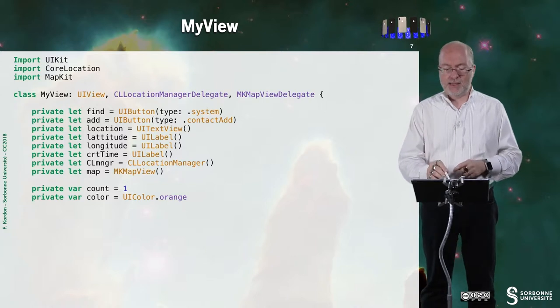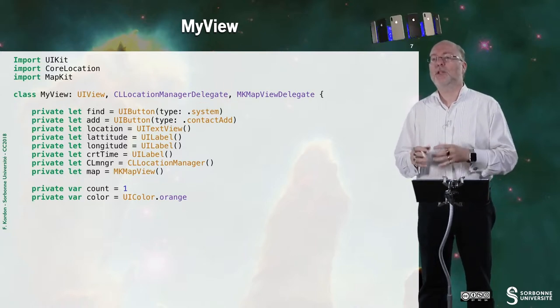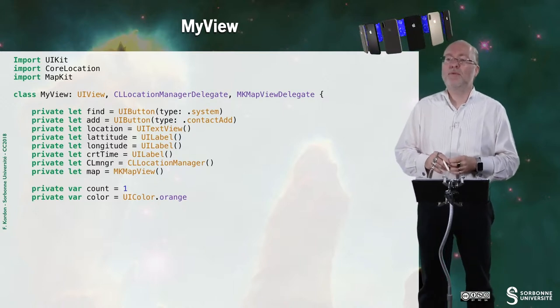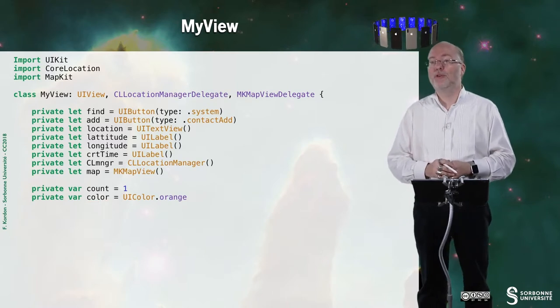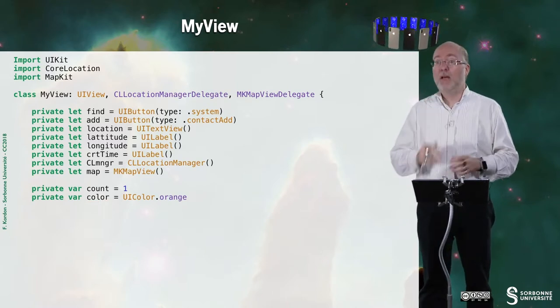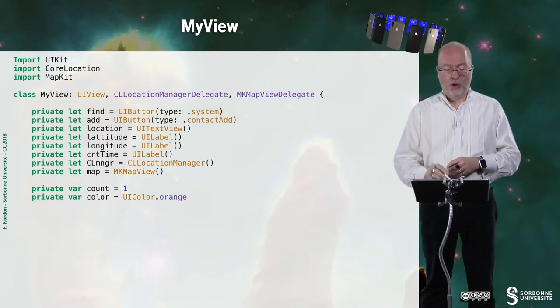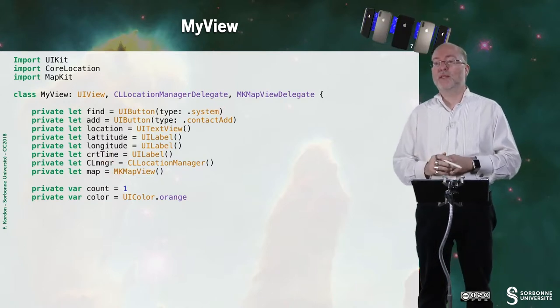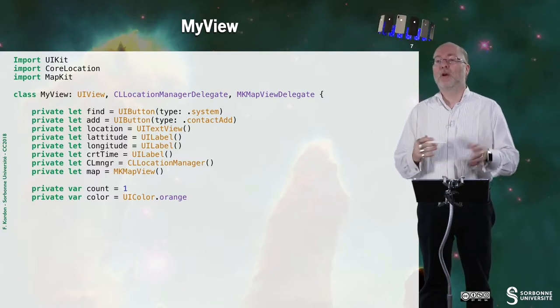So of course we need core location and map kit. And this class is respecting CL location manager delegate and MK map view delegate protocols. So here are the elements you need to handle. Mostly labels to display the information. One button. Of course one CL location manager and some other elements.